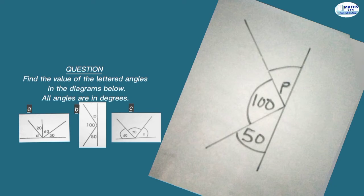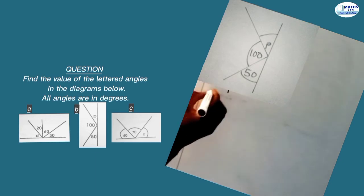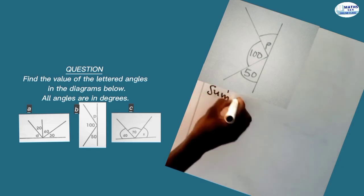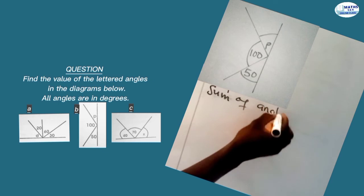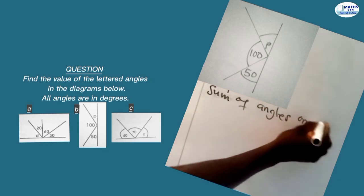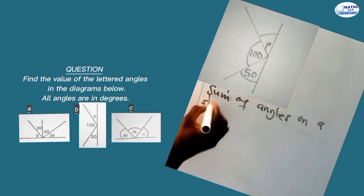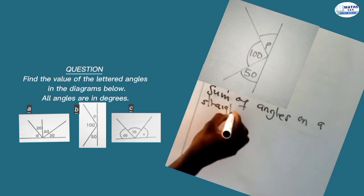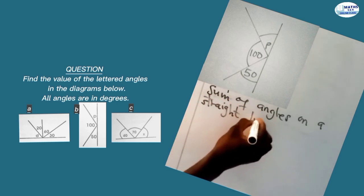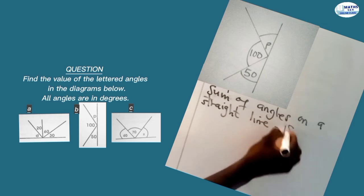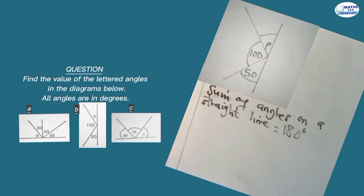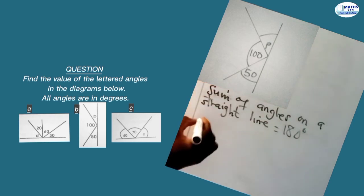Now let's look at the next question. We have p, 100, and 50 — they are all angles formed on this straight line. We state that the sum of angles on a straight line is equal to 180 degrees.